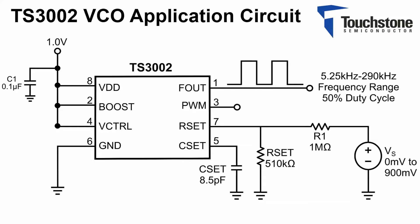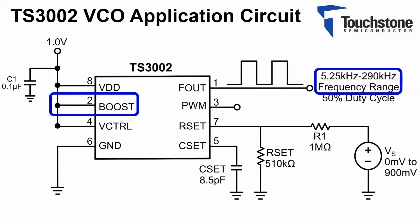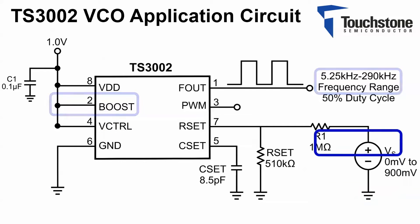Here we have the application circuit for the TS3002 VCO. Please note, in order to extend the operating frequency range for the TS3002 timer at 290 kHz, it is necessary to tie the boost pin to VDD as shown in the circuit.